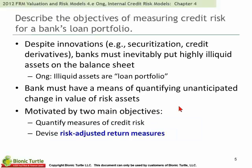Chapter four is on loan portfolio and expected loss. The objective of measuring credit risk is that banks must have a means of quantifying unanticipated change in the value of risk assets. They are motivated by two main objectives: to quantify measures of credit risk and to devise risk-adjusted return measures.